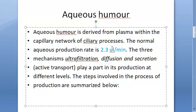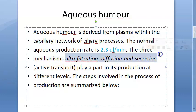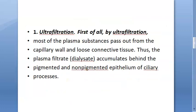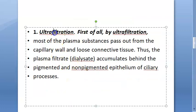The rate of aqueous production is 2.3 microliters per minute. Remember this. The three mechanisms are ultrafiltration, diffusion, and secretion.